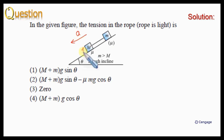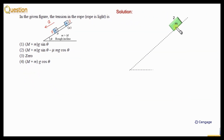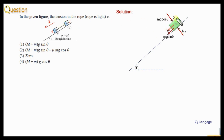Say this block is block number one and this is block number two. Now we can draw the free body diagram. First, consider block number two. The component of the weight perpendicular to the inclined plane, parallel to the inclined plane — this is the normal reaction, this is the tension force, and since it is sliding down, friction will be in the upward direction and kinetic in nature.